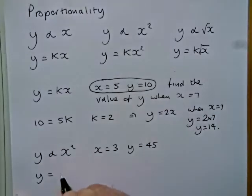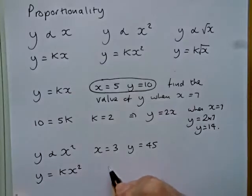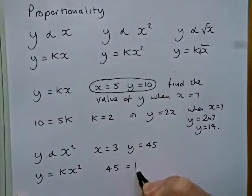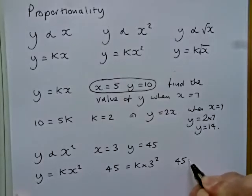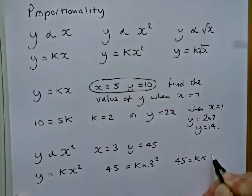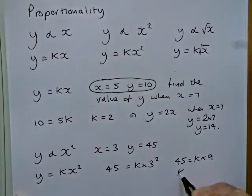So what we write is y equals kx squared. We then substitute in the values of y, which is 45, equals k times 3 squared. And we then solve this equation in k. So 45 will equal k times 9. And you should realize straight away that k is equal to 5.